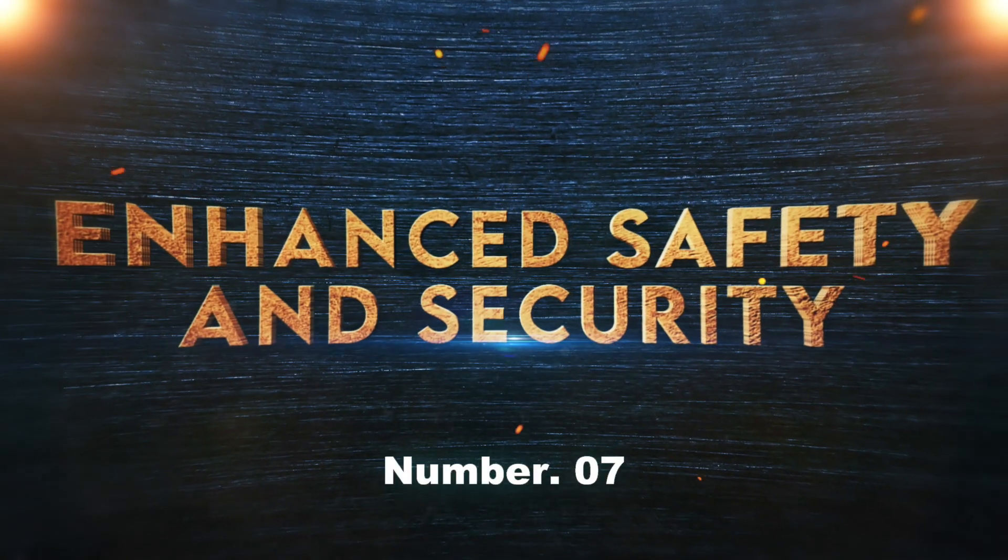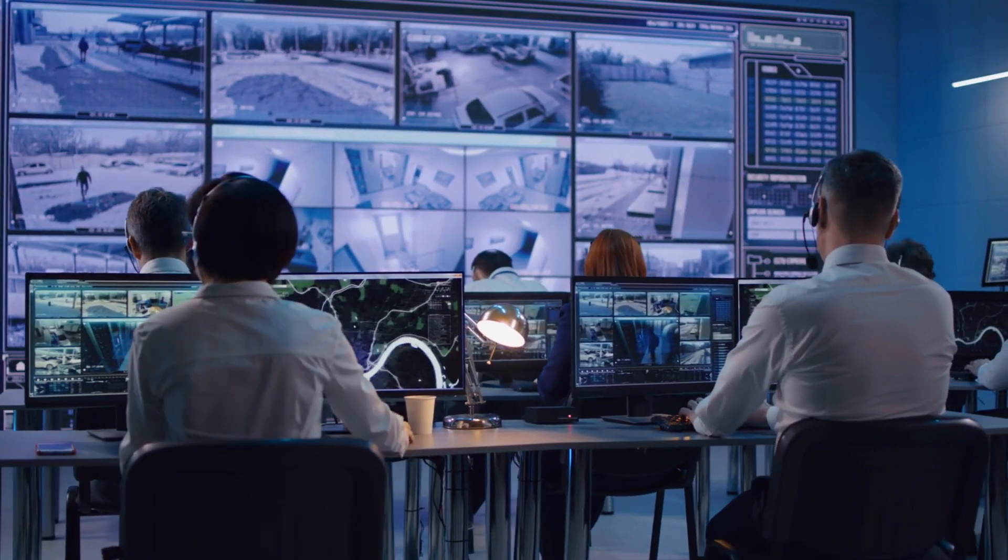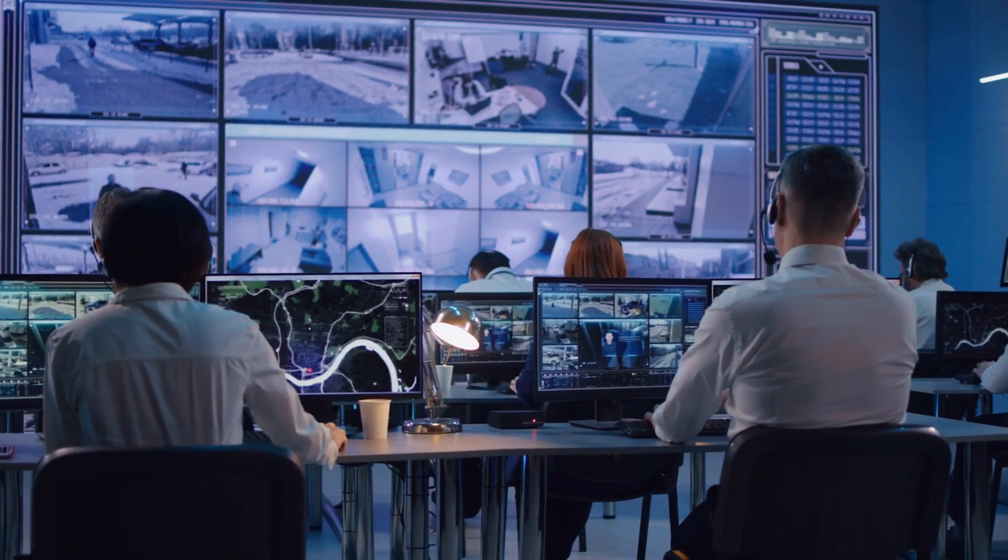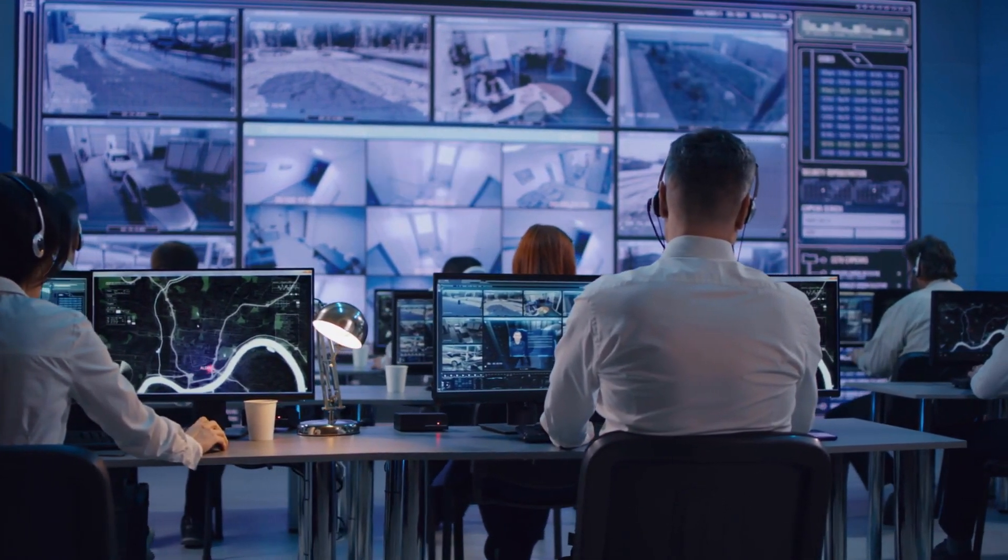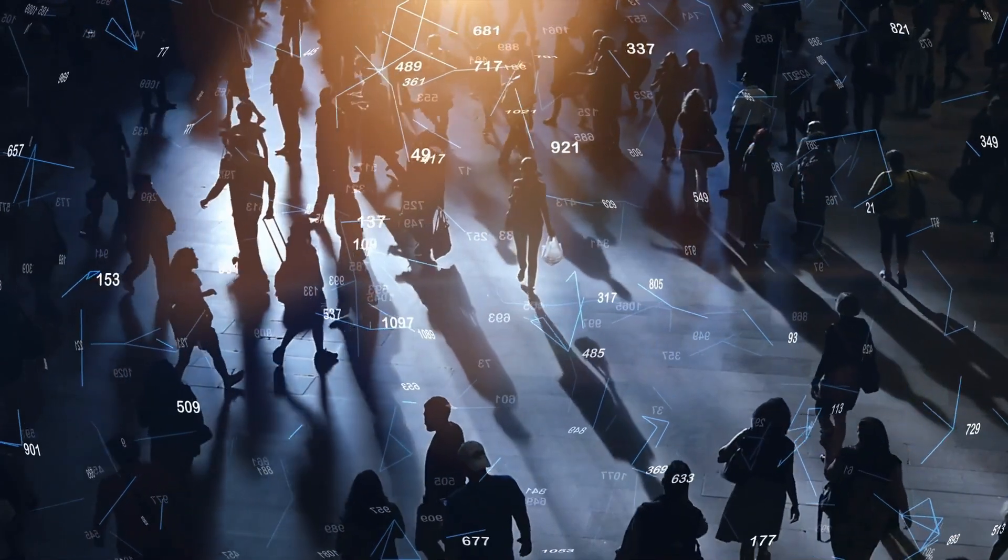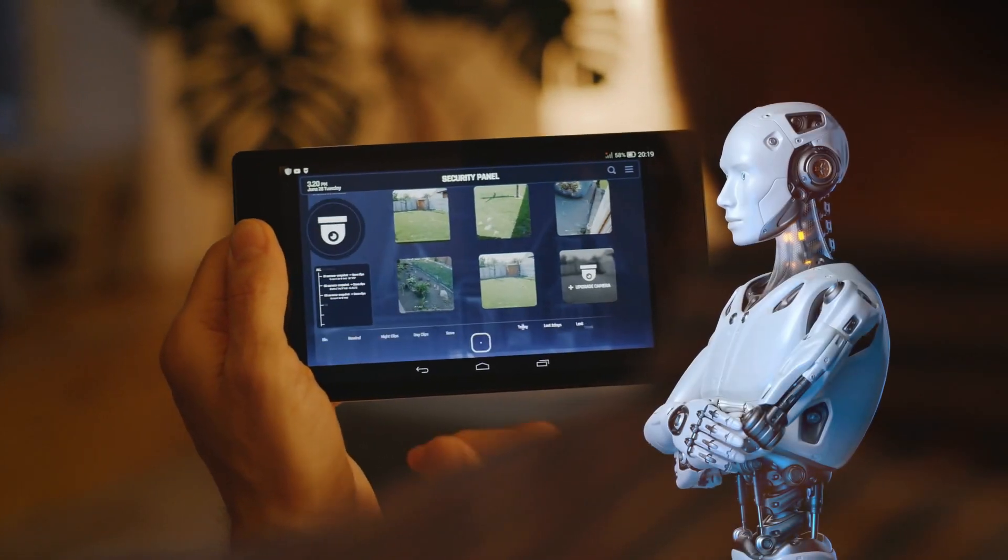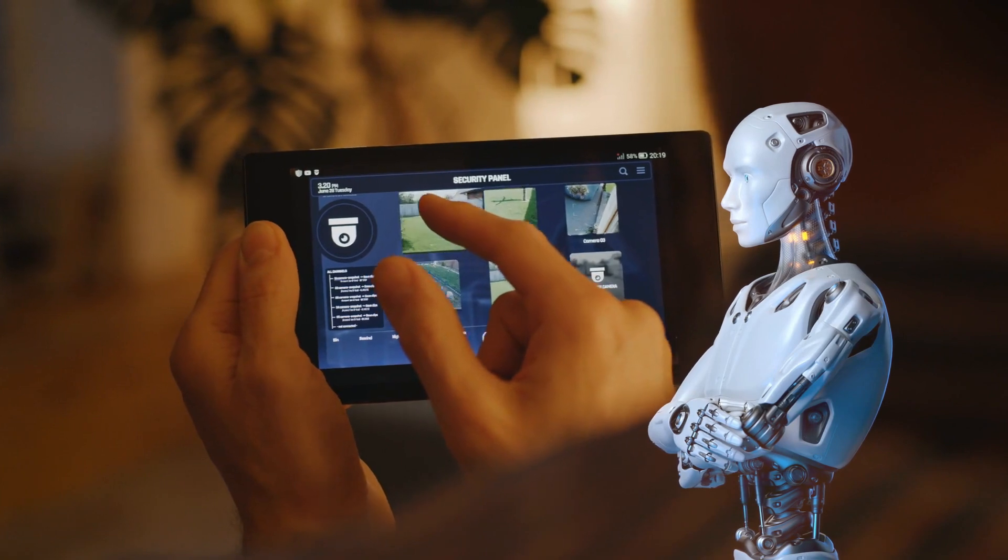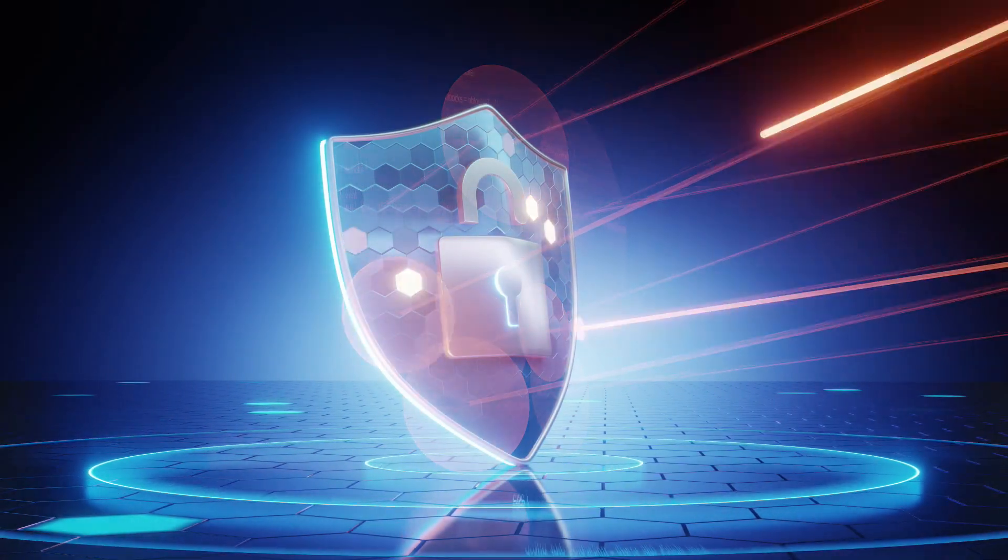Number 7. Enhanced safety and security. Whatever ways we secure our belongings today will become tenfold more secure by the time we reach 2030. Surveillance cameras equipped with AI will be able to identify potential threats and suspicious activities, and smart home security systems will use AI to predict and prevent burglaries, making our homes safer. In cybersecurity,